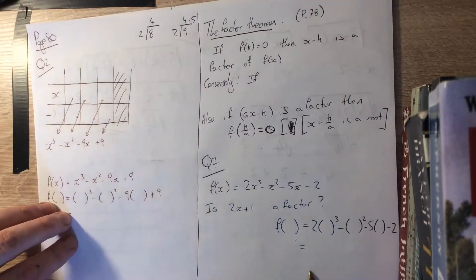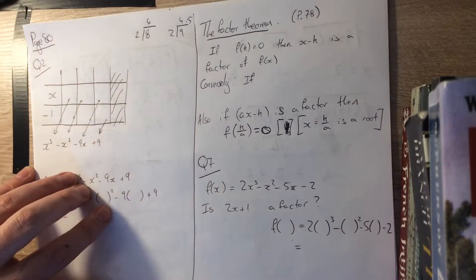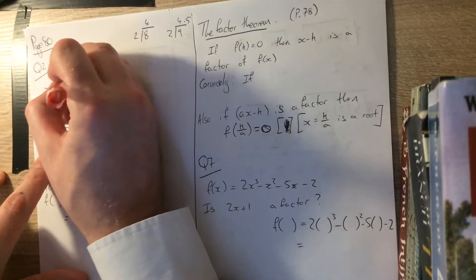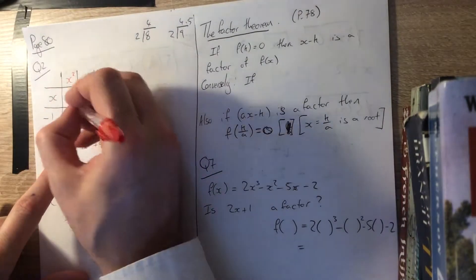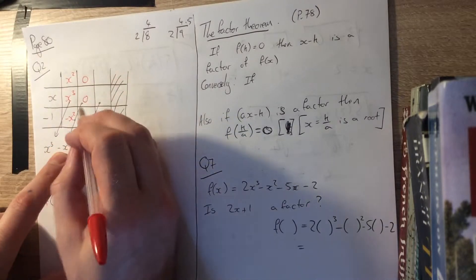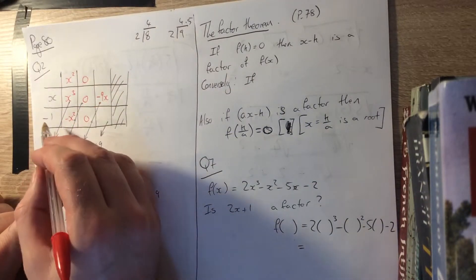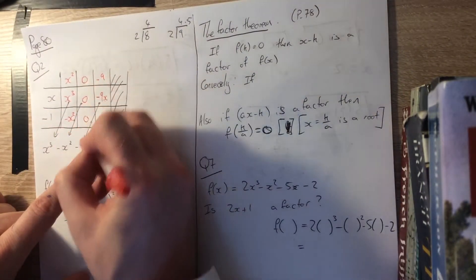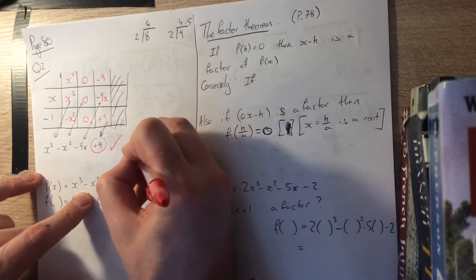One thing you can do is check: does x minus 1 divide into x cubed minus x squared minus 9x plus 9? Using the array method of long division, to get x cubed we need x squared up top, giving minus x squared below. That equals what we wanted, so there's a 0 there. For minus 9x we need minus 9 up top; minus 9 times x gives minus 9x, and minus 9 times minus 1 gives plus 9, as required. So yes, x minus 1 is a factor.